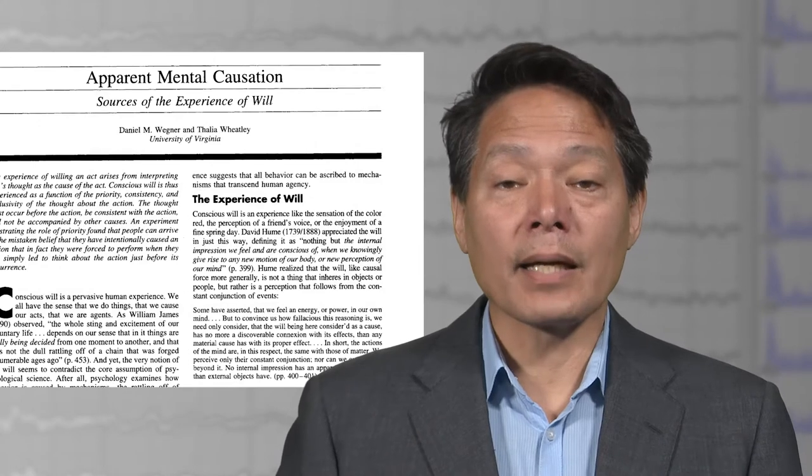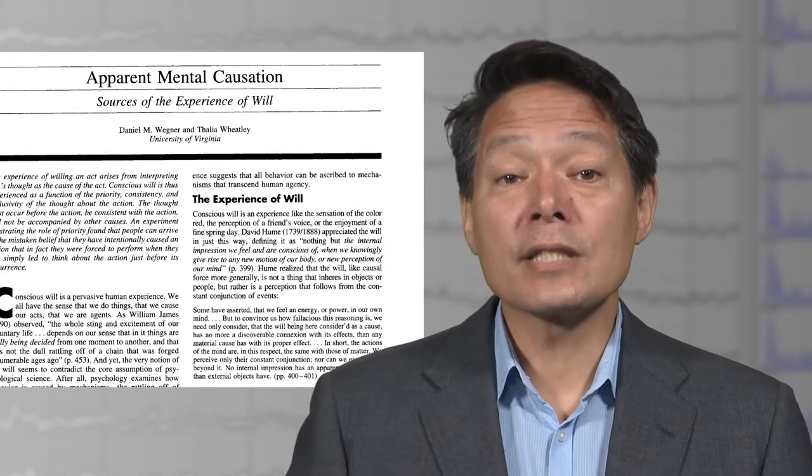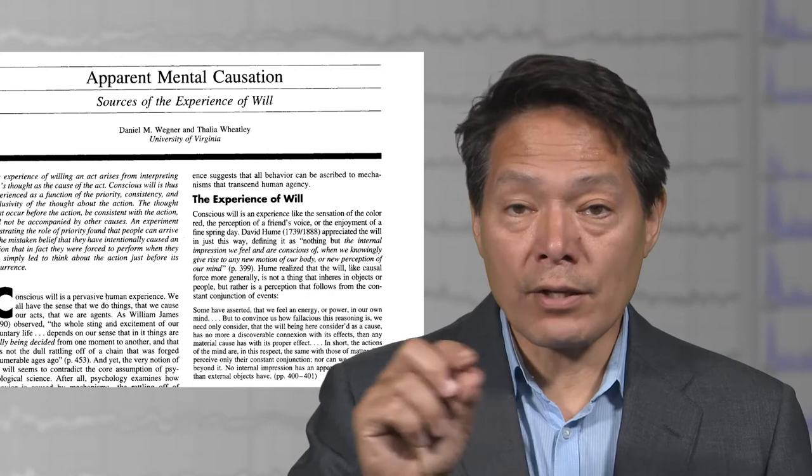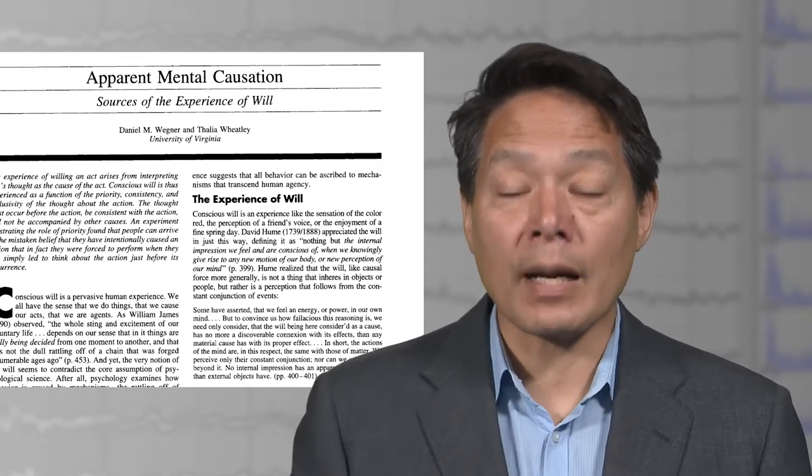The majority of Wegner's evidence for his theory of apparent mental causation comes from studies where people subjectively experienced that they were the cause of an event when they in fact were not. One example involves the game I Spy. In this study by Wegner and Wheatley in 1999, two subjects jointly moved a shared cursor around various images of objects.